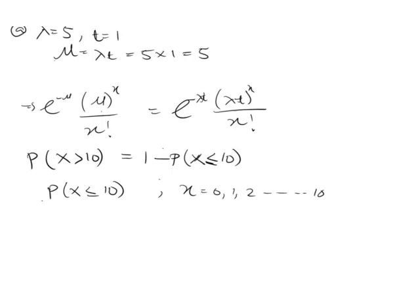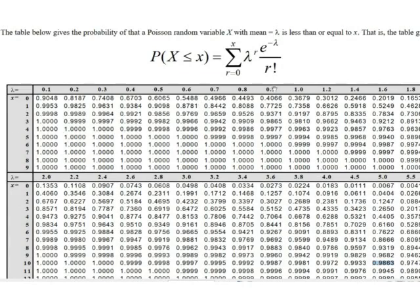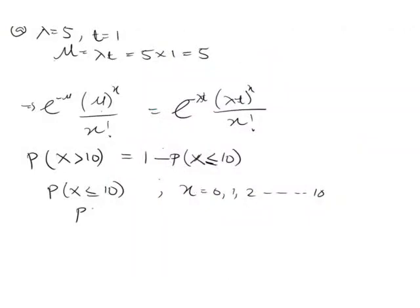Going to the Poisson cumulative distribution table, which gives the summation of the Poisson formula. We locate where x is 10 and lambda is 5. Finding their intersection in the table, the cumulative probability — that is, the sum of all Poisson probabilities from x = 0 up to x = 10 when lambda is 5 — is 0.9863.